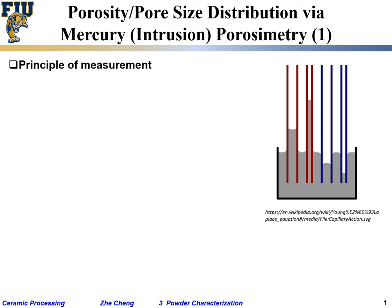The last thing we are going to talk about is the so-called mercury porosimetry. Mercury porosimetry means you are essentially using mercury (Hg) to measure something about pores.